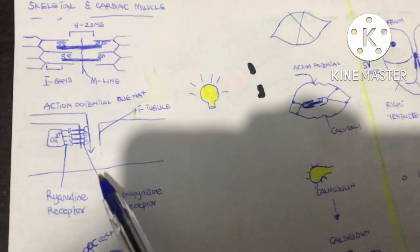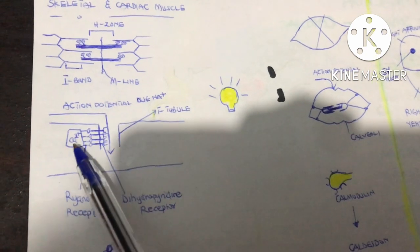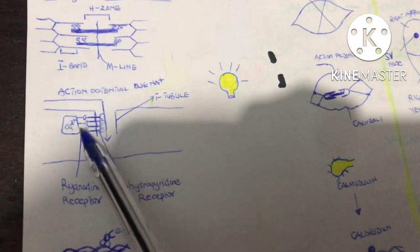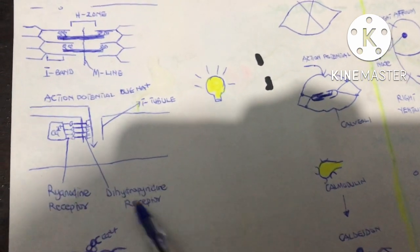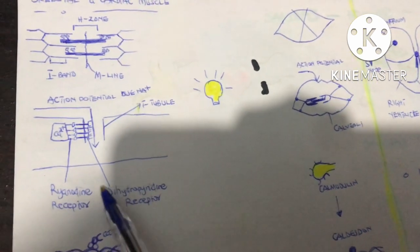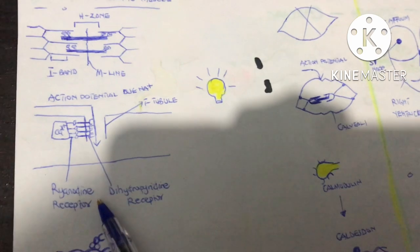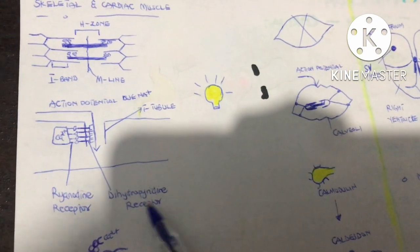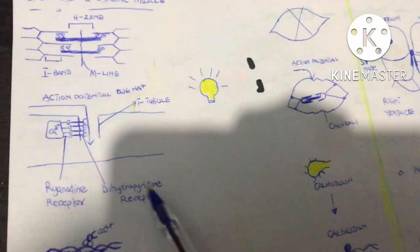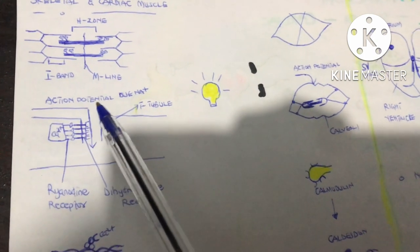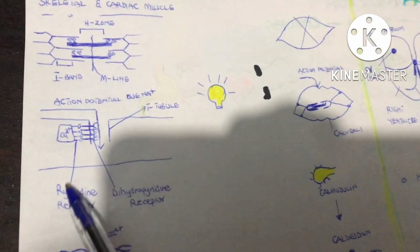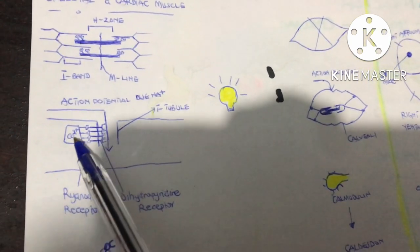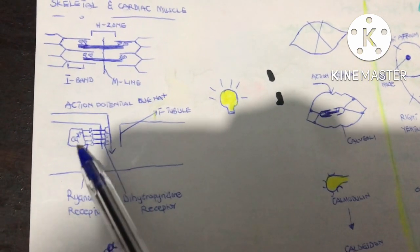The dihydropyridine receptor is joined to another receptor on the surface of the endoplasmic reticulum called the ryanodine receptor. Any conformational change in the DHP receptor leads to a conformational change in the ryanodine receptor — they are linked by an electrical dense foot. The DHP receptor undergoes a conformational change when it senses the action potential, causing the ryanodine receptor to also change conformation, leading to the release of calcium from the endoplasmic reticulum.